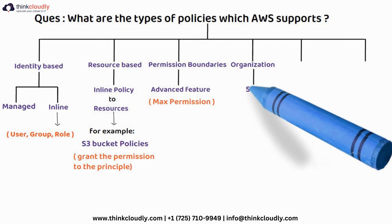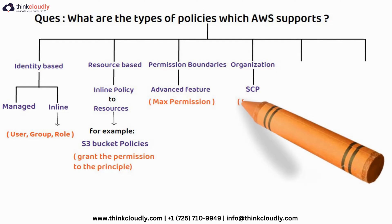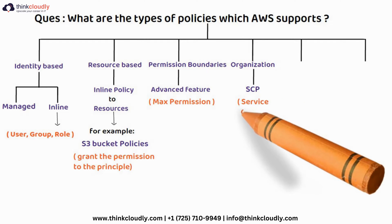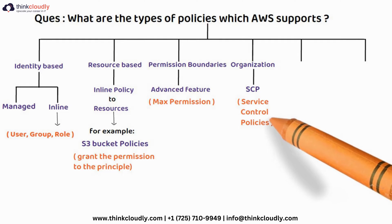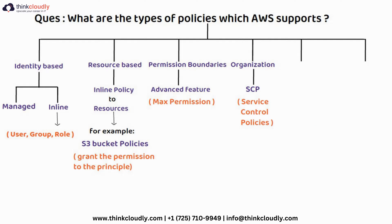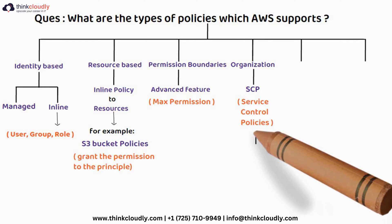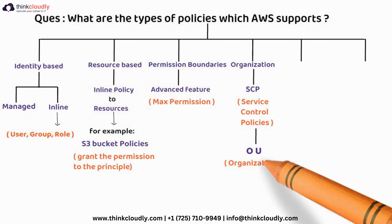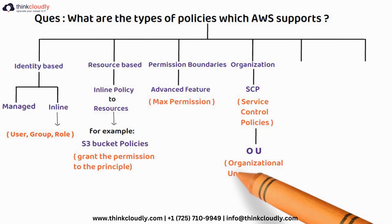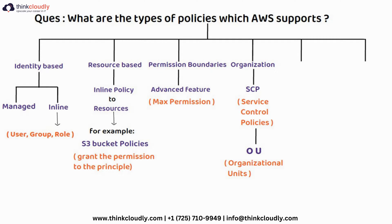The next type of policy is Organization SCPs. SCP stands for Service Control Policy. Service control policies set the maximum permissions for an organizational unit (OU). An organizational unit is like a container which can contain the root account, sub-organizational units, and various sub-accounts.